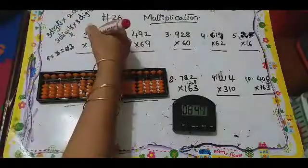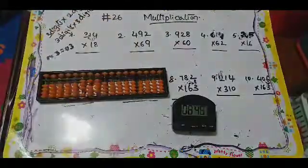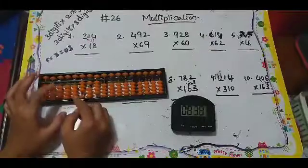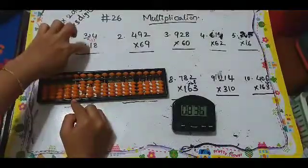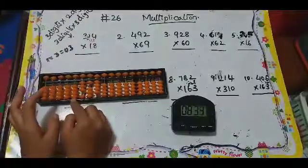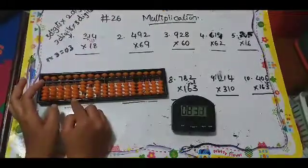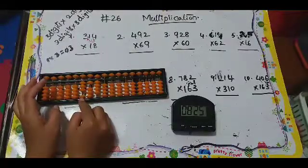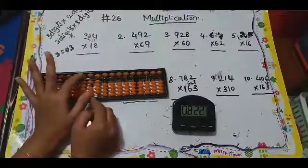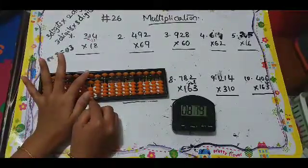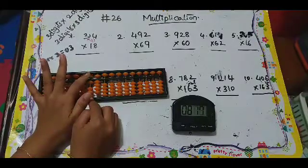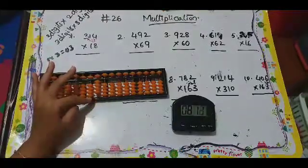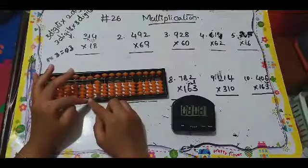Now I will do eight with 314. Eight times three is 24. To put 24, I have to leave this column — I'm not including the fifth column, so I will start my answer from here. Three eights are 24, so plus five minus three, plus four. To do plus four: plus five minus one. 24 done. Next, eight ones are eight: zero eight.